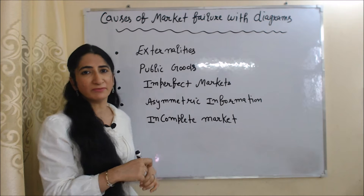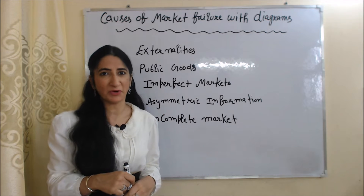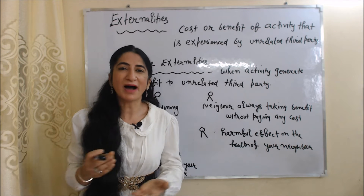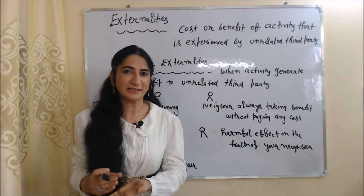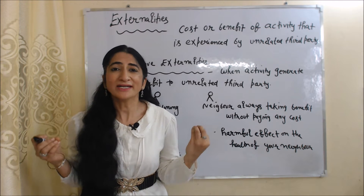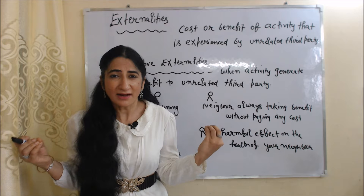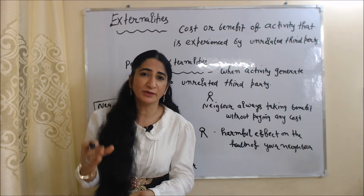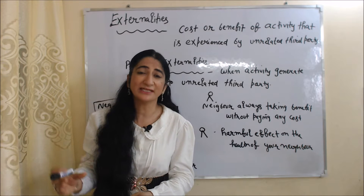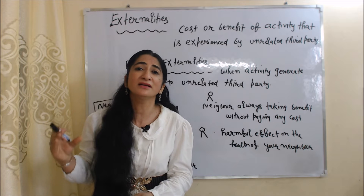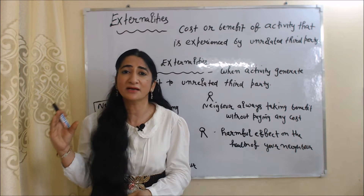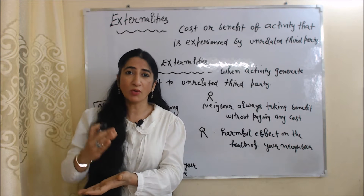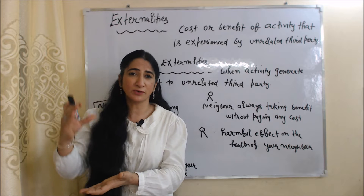There are many causes of market failure, like externalities, public goods, imperfect markets, asymmetric information, and incomplete markets. We will discuss each one by one with a diagram. The first cause of market failure is externalities. Externalities are a cost or benefit of an activity that is experienced by an unrelated third party.